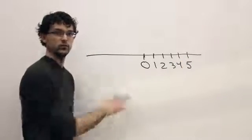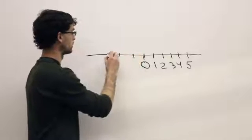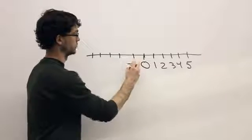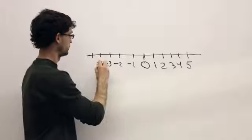On the left side of zero are negative numbers, so when we draw our tick marks over here, we'll put negative one, negative two, and all the way down.